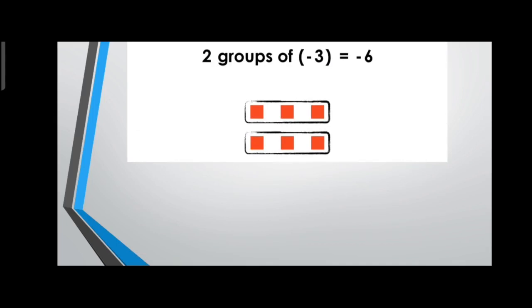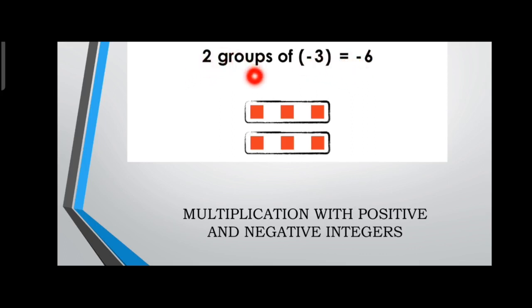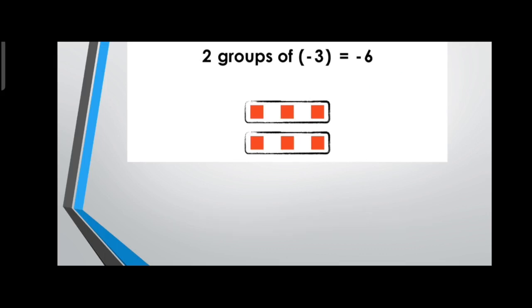Now let's move to negative multiples. Two groups of minus 3 equals minus 6. Here the first number is positive and the second is negative, so 2 multiplied by minus 3 gives minus 6. If both signs are the same — both positive or both negative — the product is positive. If one is positive and one is negative, the product is a negative integer.